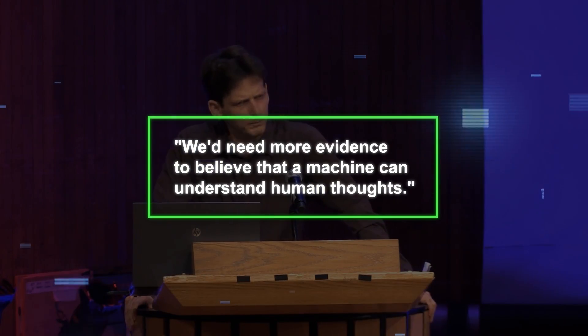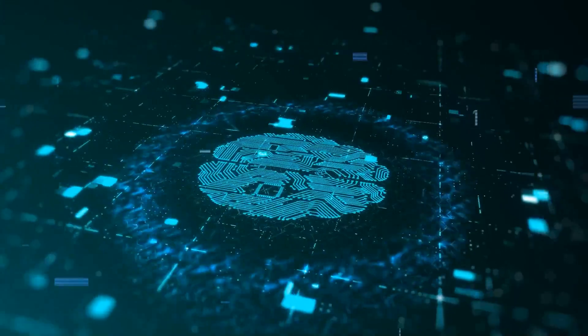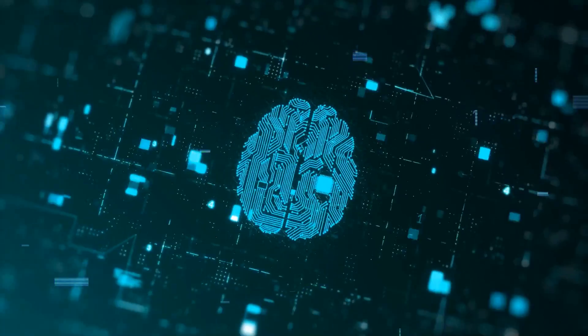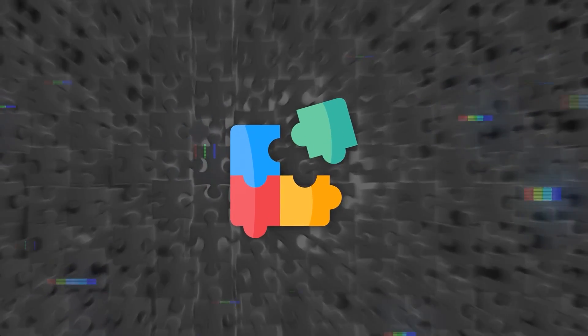Mitchell compares the study to studying human cultures, which can be a bit unstructured. Ullman thinks we'd need more evidence to believe that a machine can understand human thoughts. To truly understand these models, AI experts believe we need more detailed and strict testing.